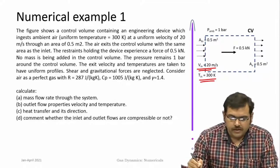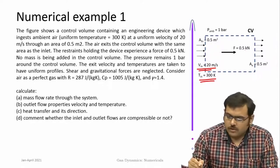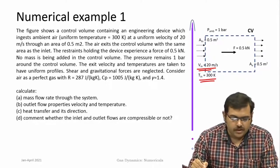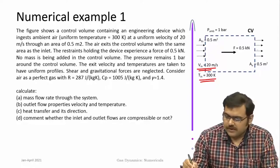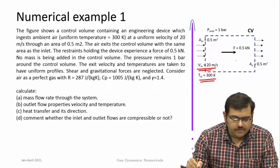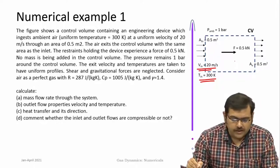This device is being held. The restraints holding the device experience a force of 0.5 kN. No mass is added into this control volume and pressure remains 1 bar all over the surface. The exit velocity and temperatures are taken to have uniform profiles. Shear and gravitational forces are neglected. Consider air as a perfect gas with R=287, Cp=1005 J/(kg·K) and gamma=1.4.